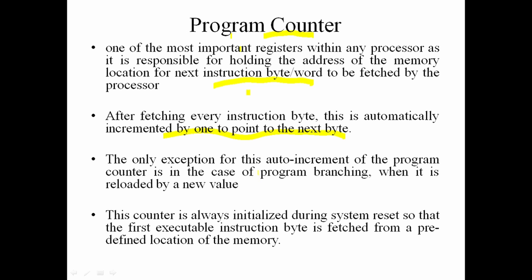There are exceptions to sequential execution, such as program branching. If we check a bit in the status register and a condition is met, we can move to a subroutine program. The program counter will automatically load the address of the branch or subroutine. When the system is reset, the program counter is also reset.